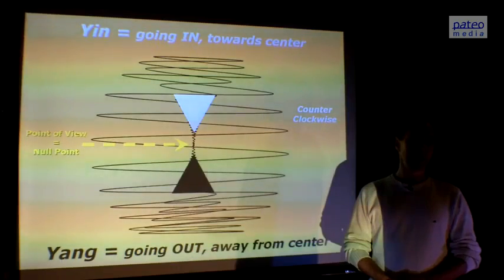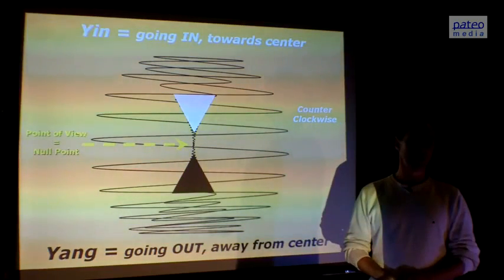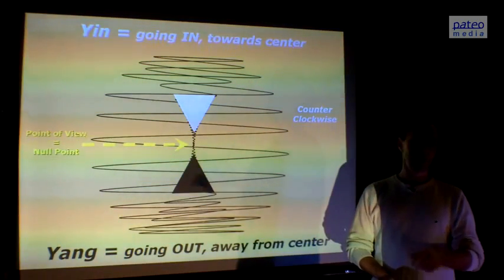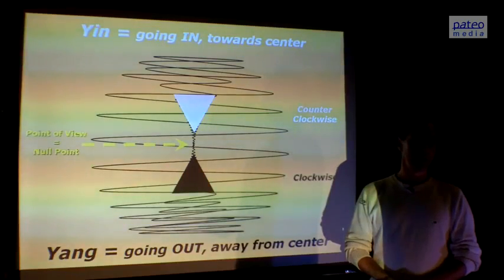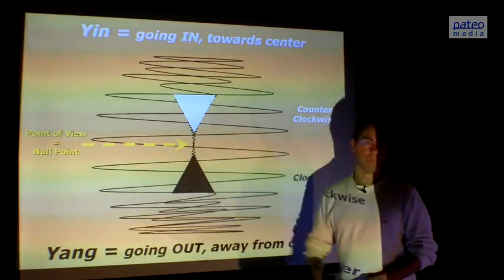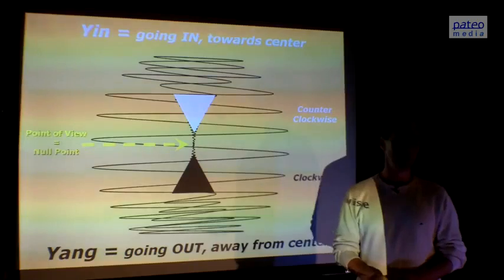On the other side, we see black light going away from us. You could say darkness. And the spiraling energy that's going away is going clockwise, again seen from the center of the apple, from the null point.